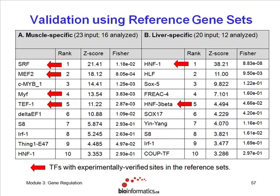These are examples of very clean data sets where we know co-regulation is occurring. The first example is a group of skeletal muscle genes — genes turned on when C2C12 myoblasts differentiate into myotubes. Twenty-three genes were submitted, and it successfully analyzed 16. It comes back and says the transcription factor binding profiles for SRF, MEF2, the MyoD family, and the TEF1 family are all at the top, which are exactly the ones you'd expect. The top five hits were all reasonable hits in the over-representation analysis.